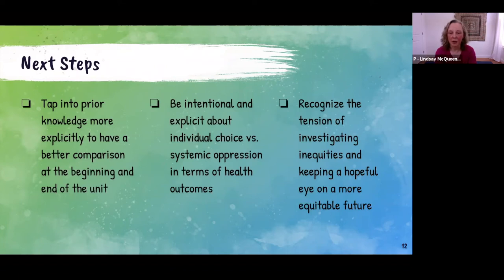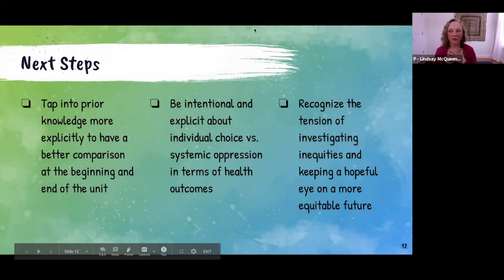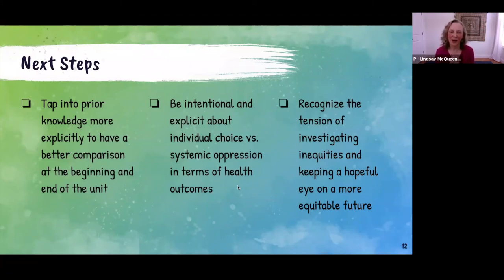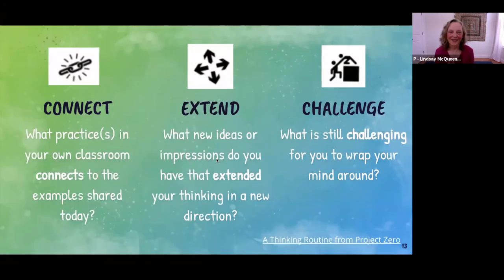I need to be more intentional and explicit — and develop my own courage — around talking about individual choice versus systemic oppression in terms of health outcomes. I felt nervous about doing that when we first came back in September because of the dual pandemics we're experiencing. I always try to balance talking about things that are uncomfortable while also providing hope with an eye toward a more equitable future. Finding co-conspirators at school helps to continue developing that courage.